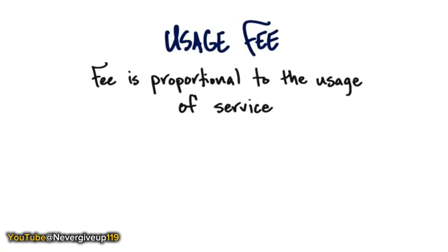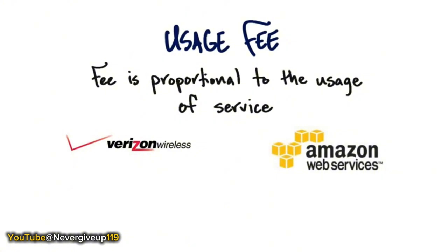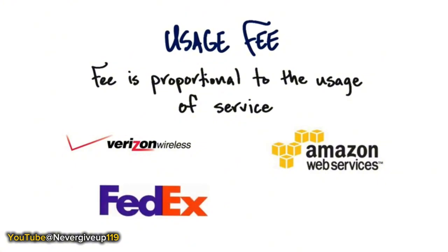There's also a usage fee strategy, where the fee is proportional to how much of the service you use. Examples include cell phone usage — paying per voice or data — Amazon Web Services where you pay per computing or database size, FedEx where you pay per envelope or package shipped, and electric power, traditionally metered proportionally. Now new solar companies install panels for free but become a utility, charging a usage fee — these are usage fee revenue strategies.